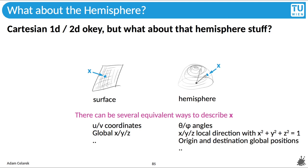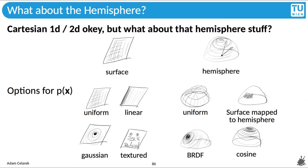Now for choices of the pdf. For the surface, uniform distribution is often a good choice, but we could also have linear, or gaussian, or even a pdf based on a texture. The choice of importance sampling strategy depends on the function that we want to integrate. For the hemisphere, we could have a uniform distribution, we could map a surface to the hemisphere and use that, we could use importance sampling of the brdf, so that's the material, we'll see an example on the next slide, or the cosine, which can be used for diffuse materials to account for the cosine rule.